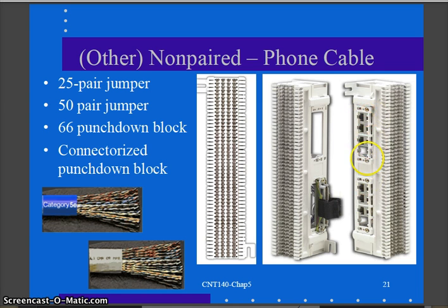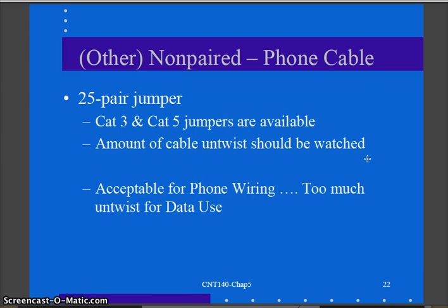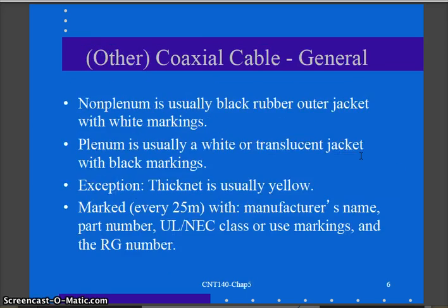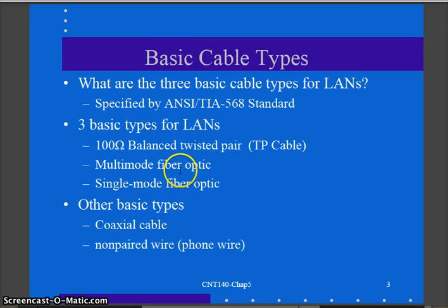They even had connectorized 66 blocks as well. By today's standards, phone cable is not adequate for modern network speeds — there's too much wire without sufficient twist. But it's shown here because when data cabling transitioned from coax to twisted pair, phone cable was the stepping stone. That's our first podcast in this chapter covering coax and phone cable. When we come back, we'll dig into twisted pair and then eventually fiber.